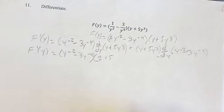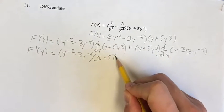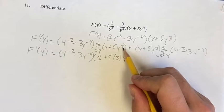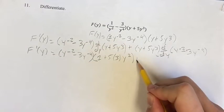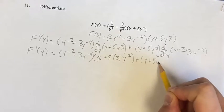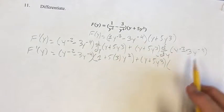Dealing with y cubed we have a power function, so we bring down the exponent to the coefficient and your new exponent is the old one minus 1, so y squared plus y times 5y cubed times the derivative of this.